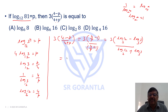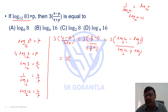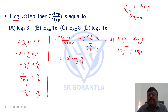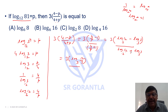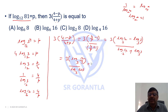Now simplifying: log m minus log n is log(m/n), so the numerator becomes log(12/3) base 3, which is log 4 base 3. And log m plus log n is log(mn), so the denominator becomes log(12 × 3) base 3, which is log 36 base 3. The full expression is 3 into log 4 base 3 divided by log 36 base 3.